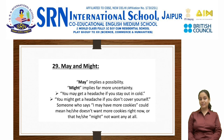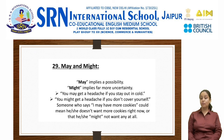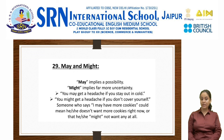The next usage is may versus might, where students usually make a mistake. May implies a possibility and might implies far more uncertainty. For example: you may get a headache if you stay out — versus: you might get a headache if you don't cover yourself. Someone who says 'I may have more cookies' could mean they don't want more right now, or might not want any at all. Remember: may implies possibility, might implies far more uncertainty.